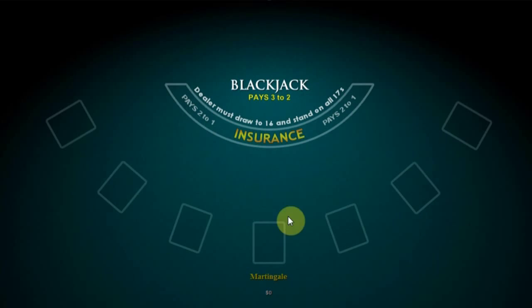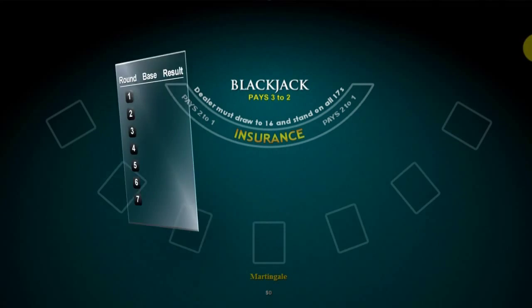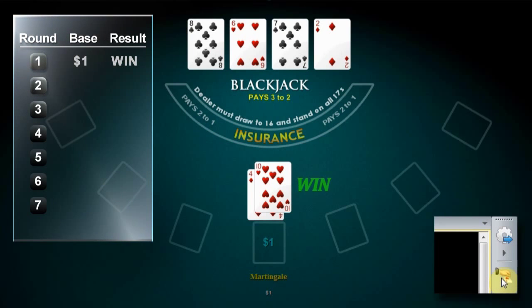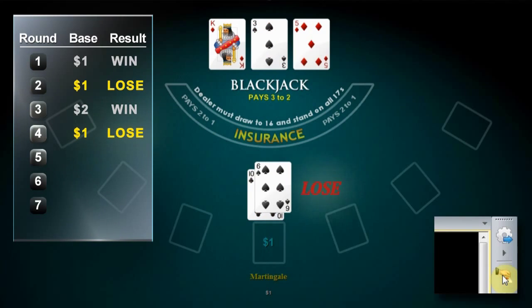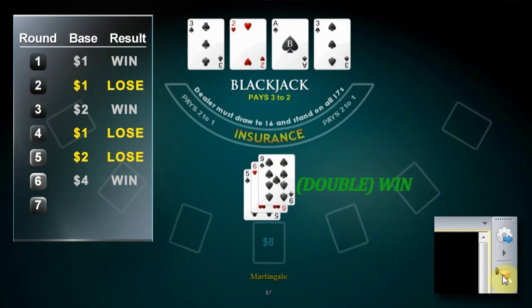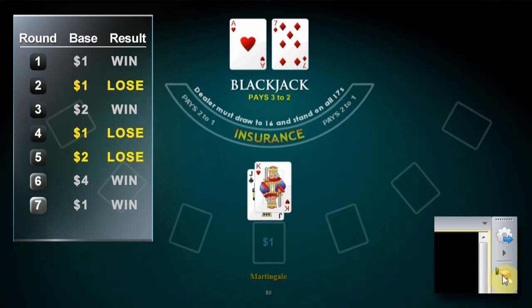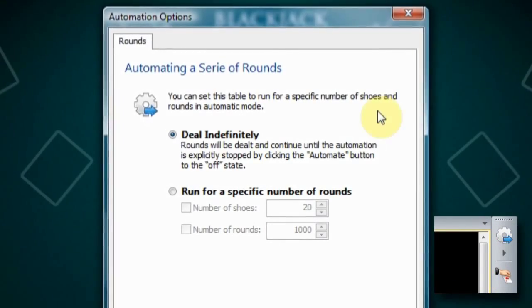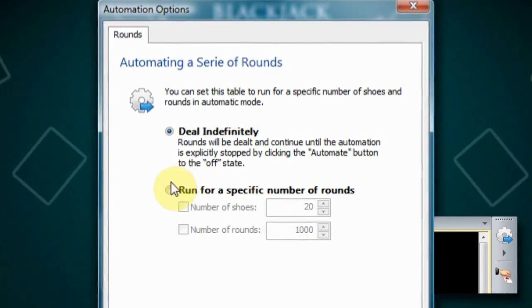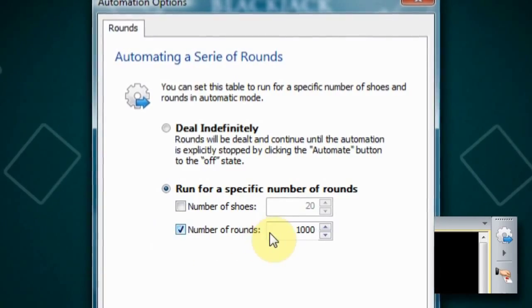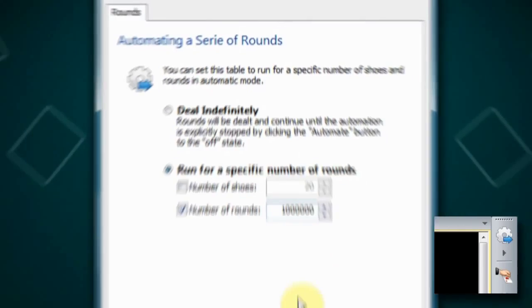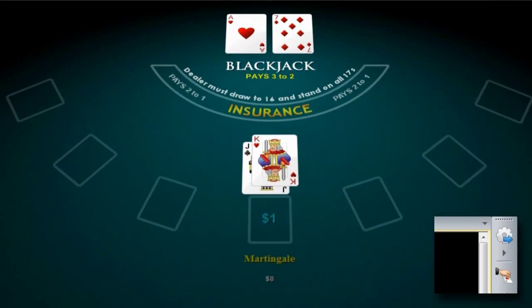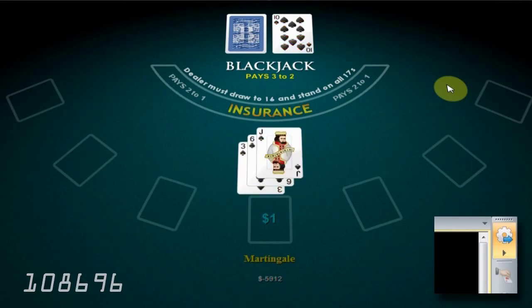Before going into high speed simulation mode, let's go through some hands to double check that our implementation generates the desired betting pattern. As you can see, that's Martingale in action. Now let's add a million hands to our simulation to run in high speed. Select the automation mode and deal, and let it go for a ride.